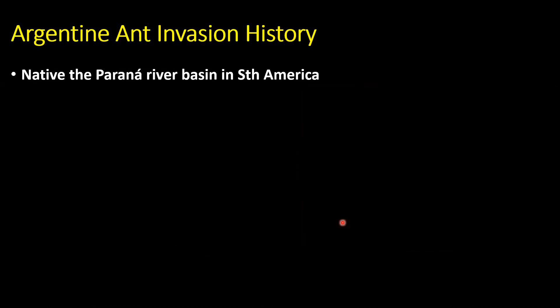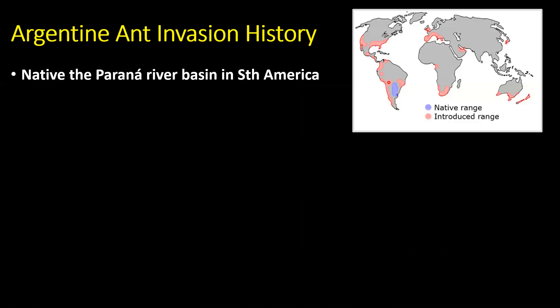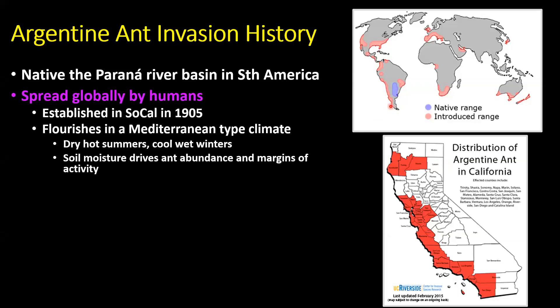Argentine ant invasion history: this insect is native to the Parana river basin in South America. The native range is shown in blue, and it's become a very aggressive global invader, spreading mainly through humans — probably through soil associated with living plants. In California, it was first recorded close to Riverside or Santa Ana around 1905 from railway yards. This ant does well in Mediterranean-type climates, thriving on dry hot summers and cool wet winters. Most importantly, soil moisture drives abundance, and because we irrigate so heavily in agriculture, we've supplied a lot of water for these ants.